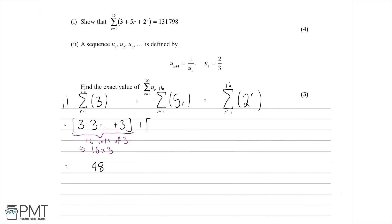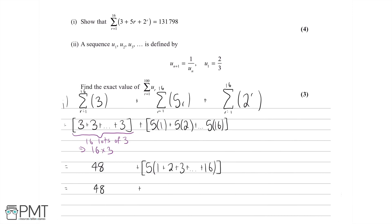This next one is a bit trickier, so let's write it out. When r=1 we have 5 times 1, when r=2 we have 5 times 2, and so forth up to 5 times 16. We can factorize out the 5, leaving us with 5 times (1 plus 2 plus 3 and so forth up to 16). As every term has a 5 in it, we factorize it out, and putting this into a calculator gives us 680.